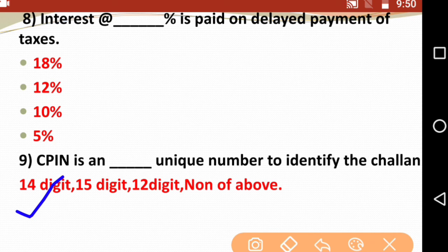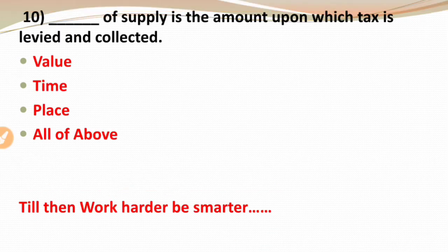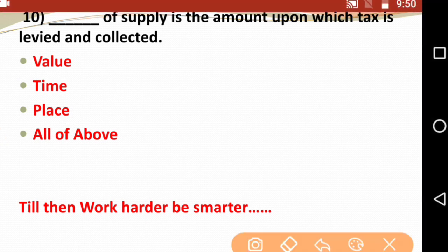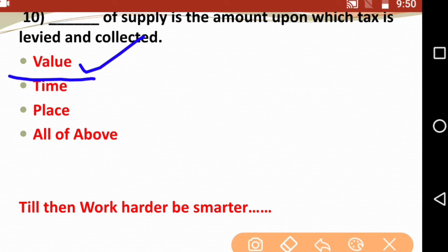Today's last question: Dash of supply is the amount upon which taxes are levied and collected. The options are value, time, place, or all of the above. When calculating GST, it is calculated on the value of supply. So value of supply is the amount upon which taxes are levied and collected.